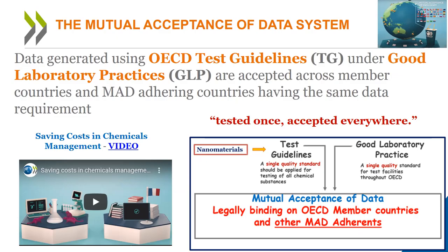The MAD system is an internationally legally binding agreement. It has two main components that together ensure the development of harmonized chemical safety data. The first one is OECD test guidelines, and the second, the OECD principles of good laboratory practice, or GLP. Together, they strive for a single quality requirement for tests. It is also open to non-members that wish to adhere and that have complied with the GLP standards. The result is that the test done in one adherent country must be accepted in all adherent countries. This is the concept of tested once, accepted everywhere.